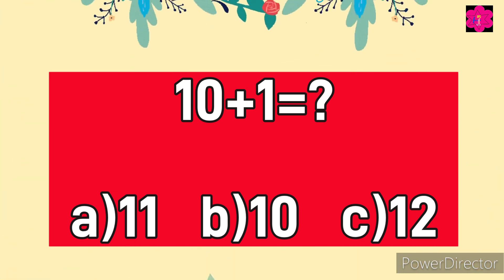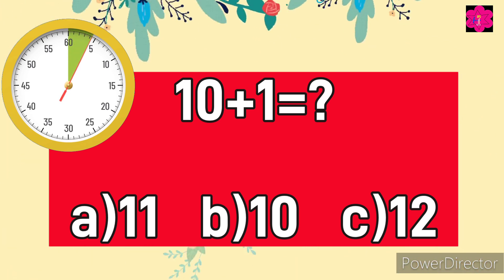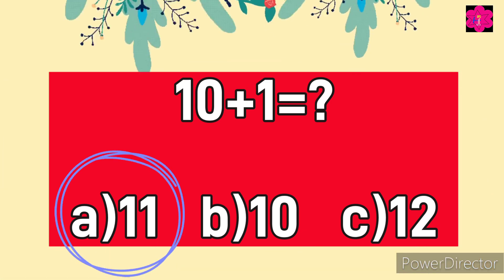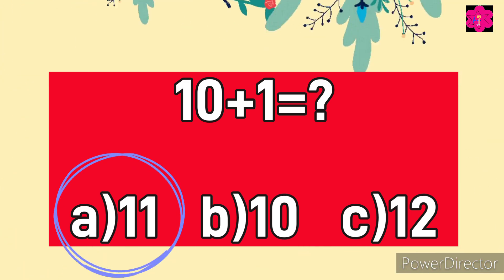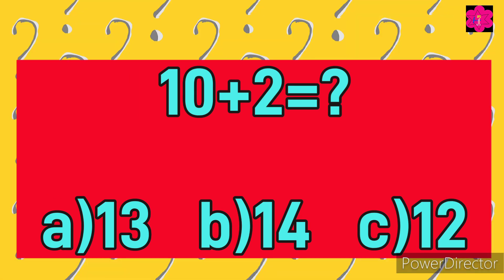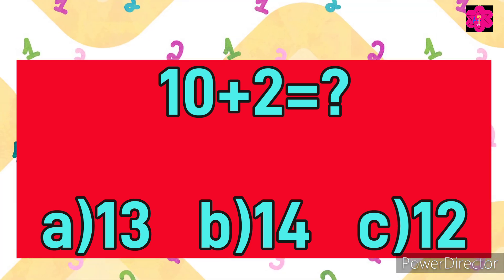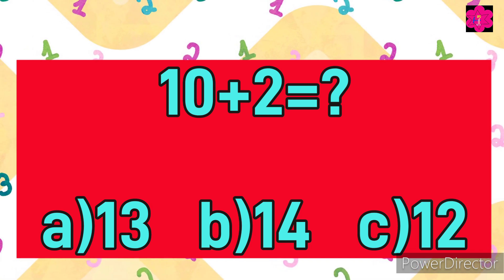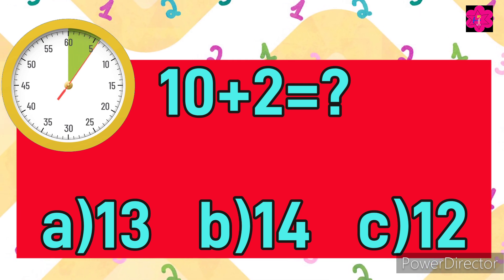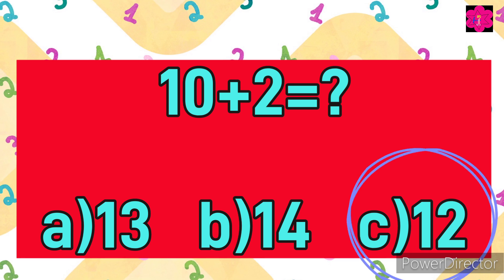Yes, correct answer is A) 11. Well done kids! Next sum: 10 plus 2 is equal to — and your options are: A) 13, B) 14, and C) 12. The time starts now.